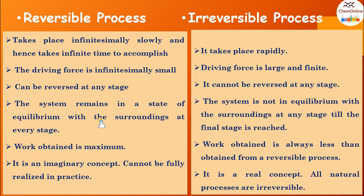In a reversible process, the system remains in a state of equilibrium with the surroundings at every stage. But in an irreversible process, the system is not in equilibrium with the surroundings at any stage until the final stage is reached. Also, we get maximum work from a reversible process, whereas the work obtained in an irreversible process is always less than what is obtained from a reversible process.